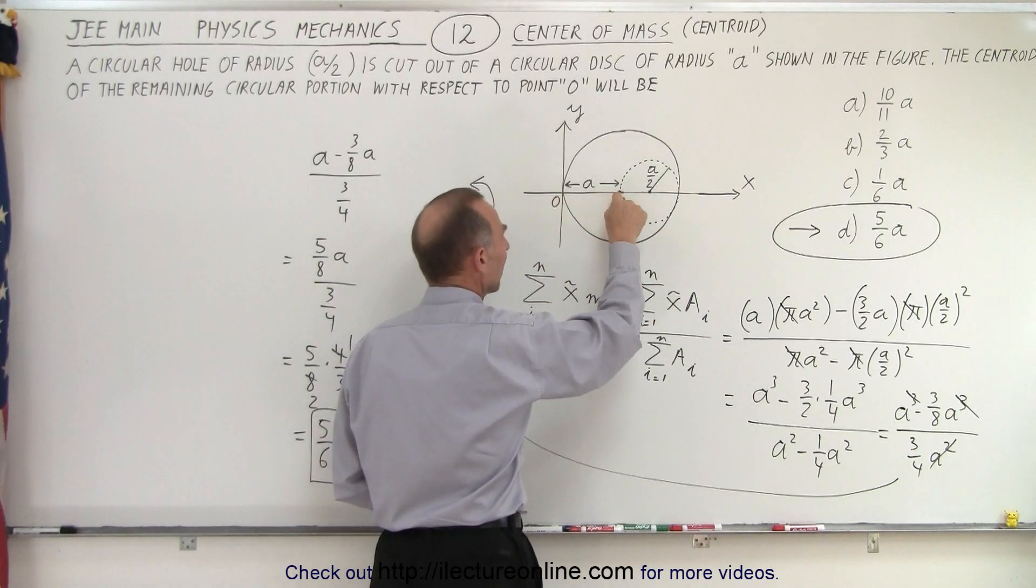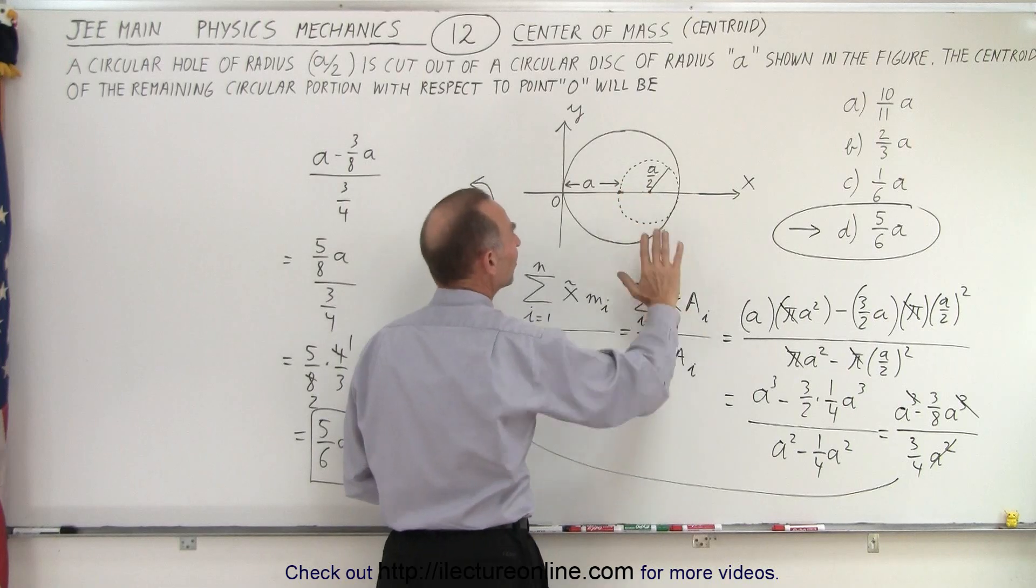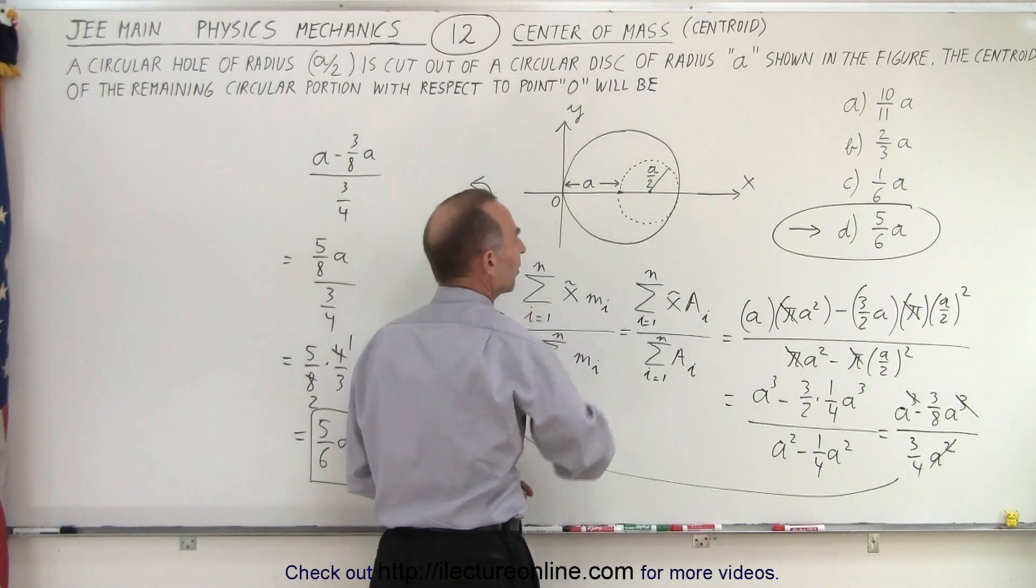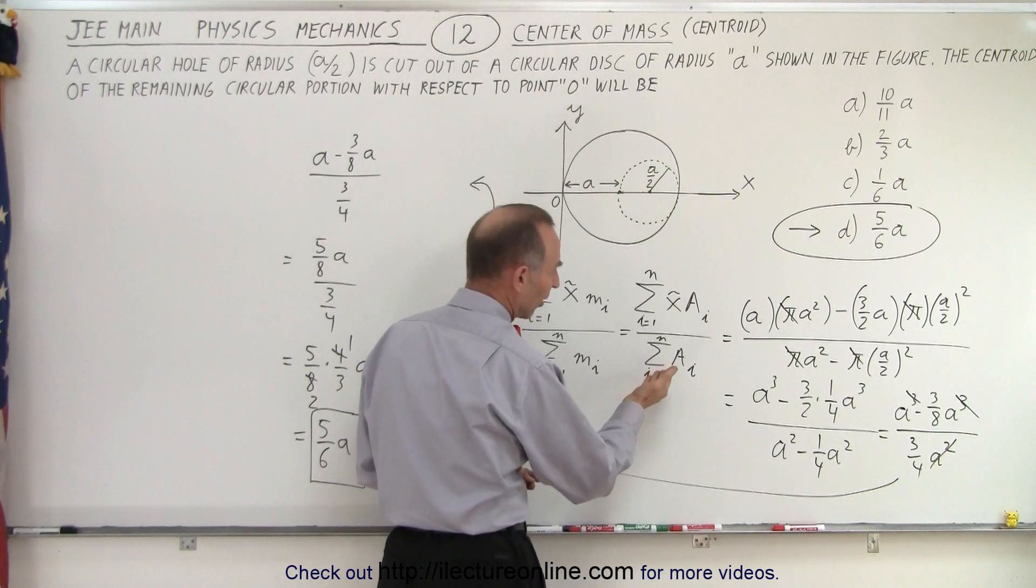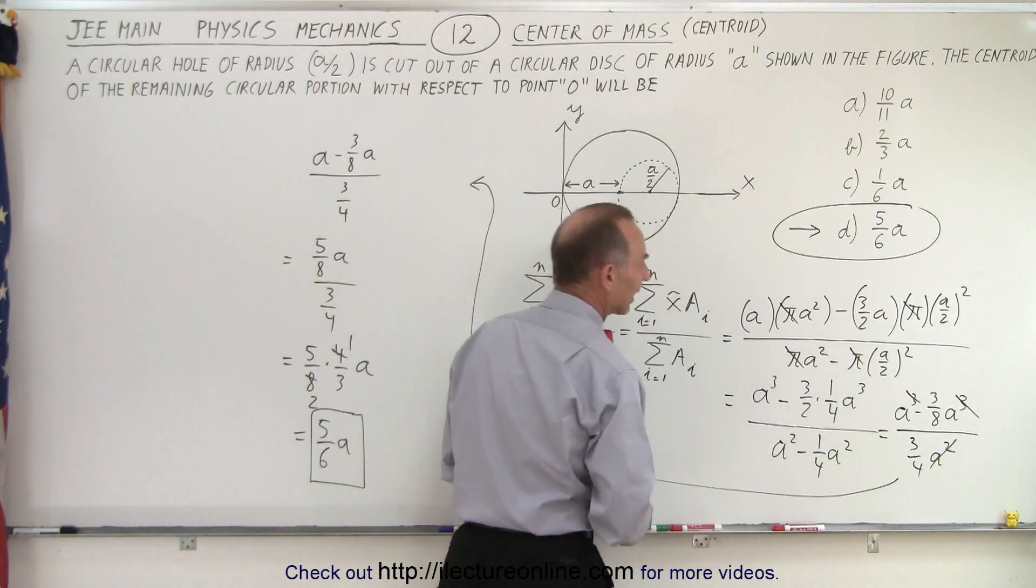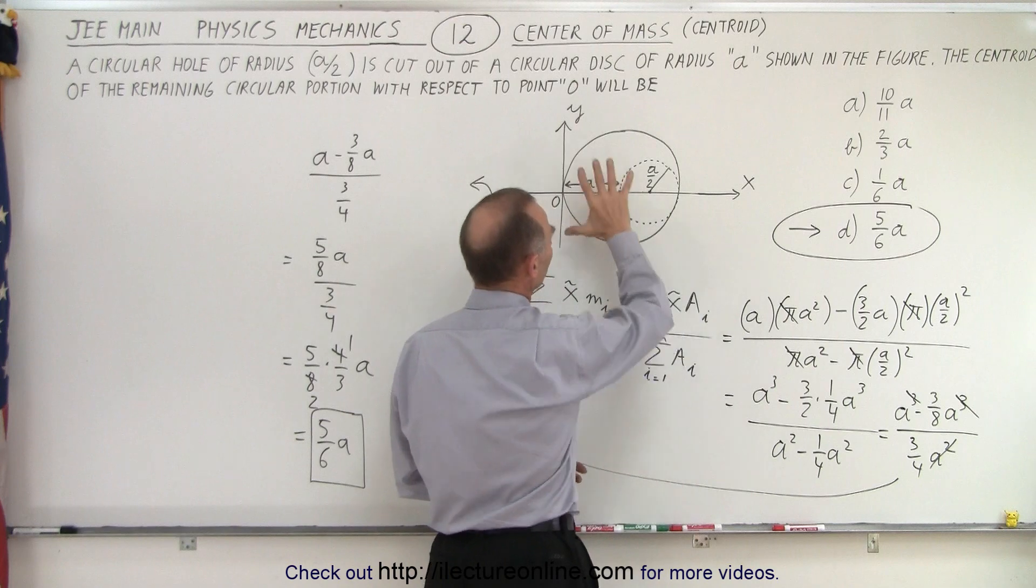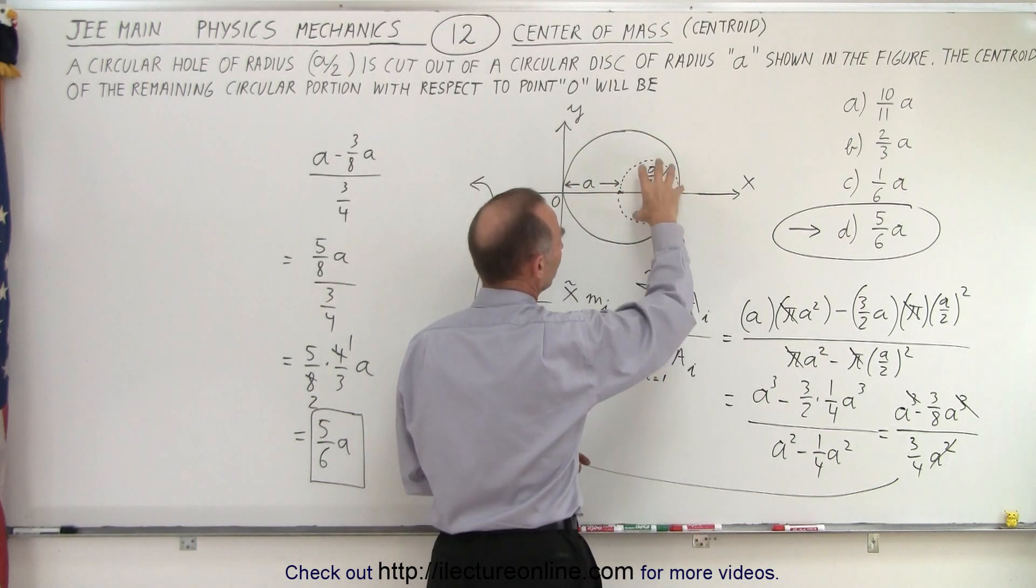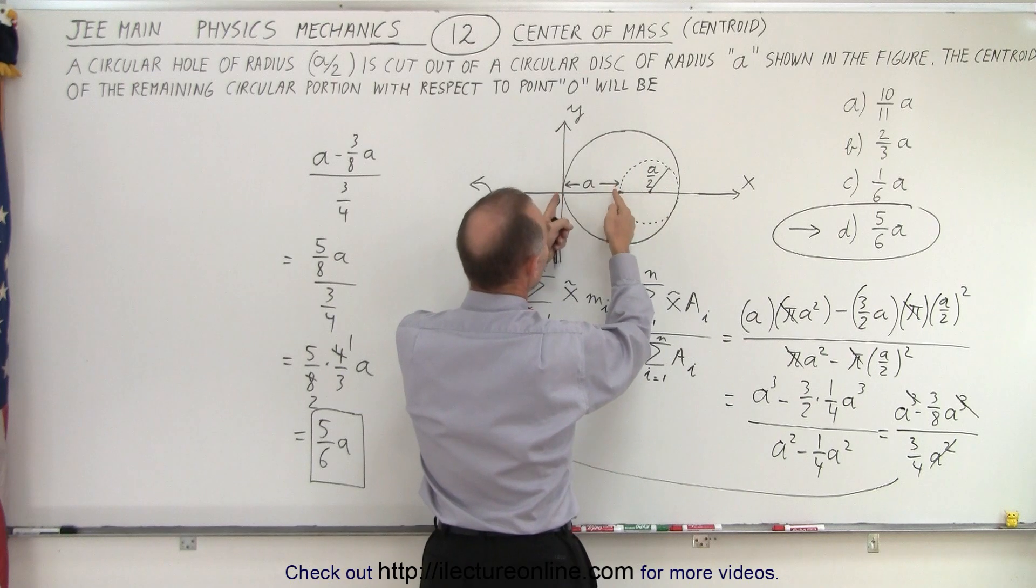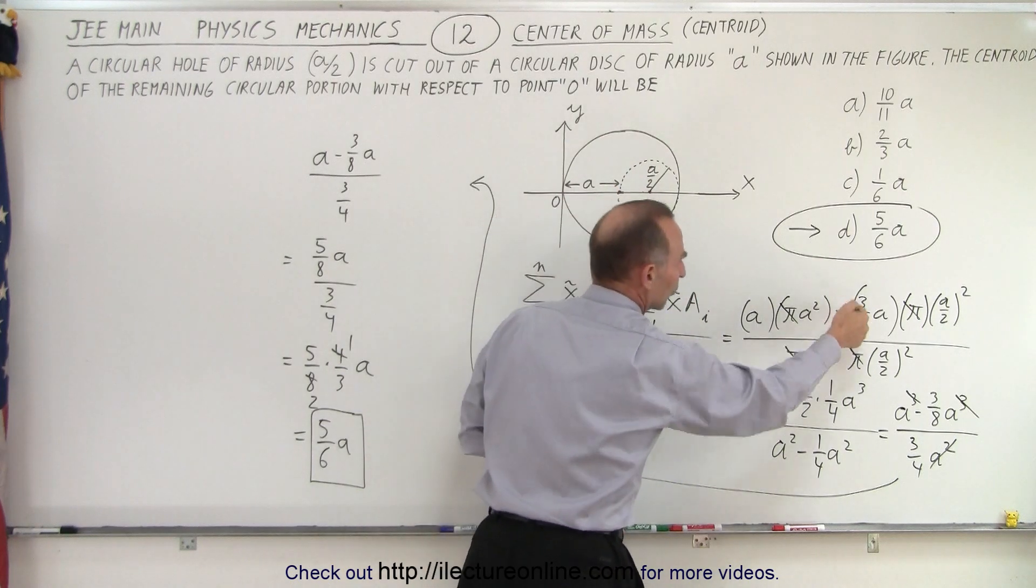We sum up all the centroids of each individual piece, which is the distance from the origin to the center mass of each piece, times the area which is representative of the mass, divided by the sum of all the areas. The sum for a hole becomes a negative. So the centroid of the disk is here, that's the distance a. The centroid of the hole is this distance, which would be a plus a half a, which is one and a half a, or three halves a.